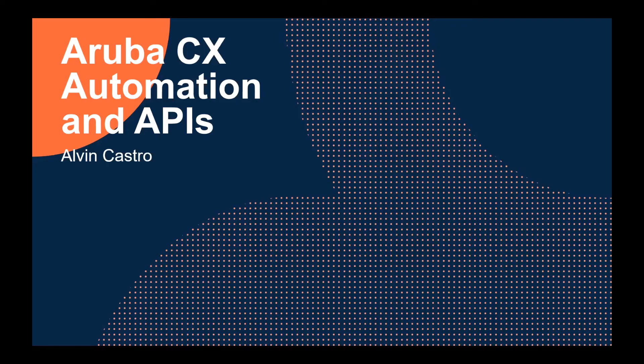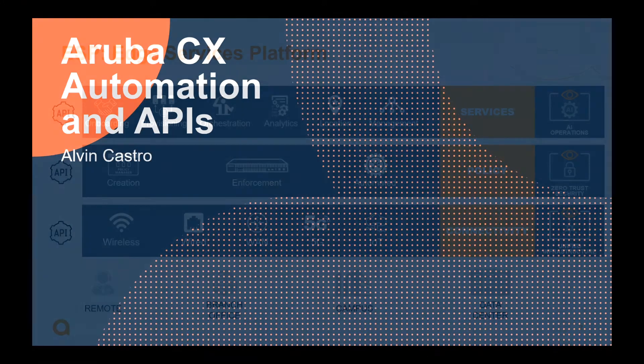In this episode, we'll hear from Alvin Castro, an automation technical marketing engineer, as well as from our old friend Ruben Iglesias, who will talk about the automation capabilities in AOS CX switching. I'm Alvin Castro, and I'm here to talk about the AOS CX automation and API capabilities.